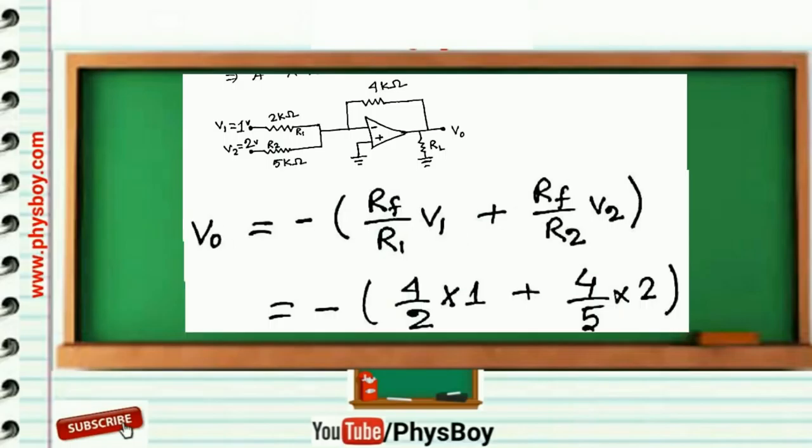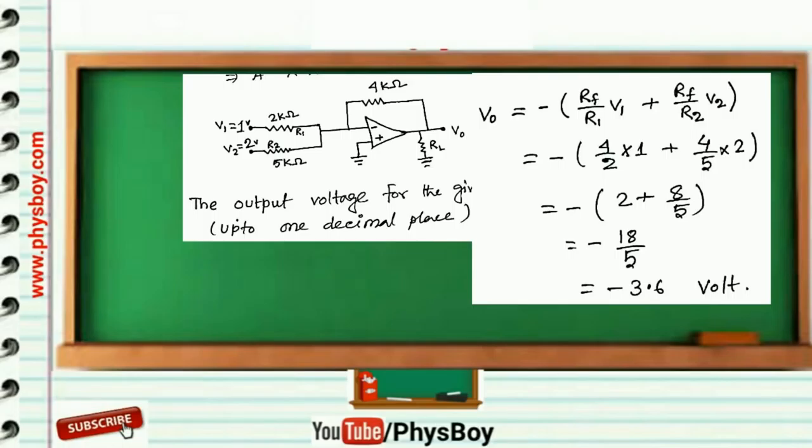Putting the value of RF, R1, V1, R2, V2, then you will get minus 3.6 volts. So the numerical value up to one decimal place will be minus 3.6.